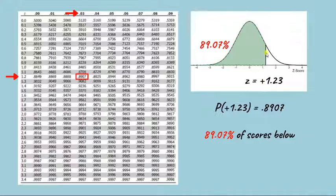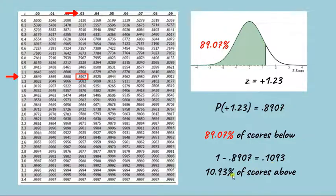If we wanted to know the percentage of scores falling at or above that z-score we could just subtract this value of 0.8907 in the table from 1 since the total area under the curve always equals 1. So if we've accounted for 0.8907 or 89.07 percent of the scores falling below this particular z-value that means that 0.1093 or 10.93 percent of scores would have to fall at or above a z-score of 1.23.